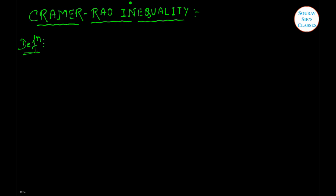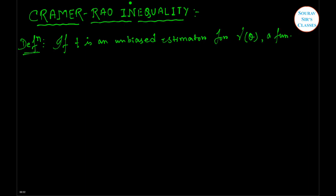Hello students, today's topic is the Cramér-Rao inequality. Now, what is the definition of Cramér-Rao inequality? If t is an unbiased estimator for gamma of theta, a function of parameter theta, then the variance of t is greater than or equal to...